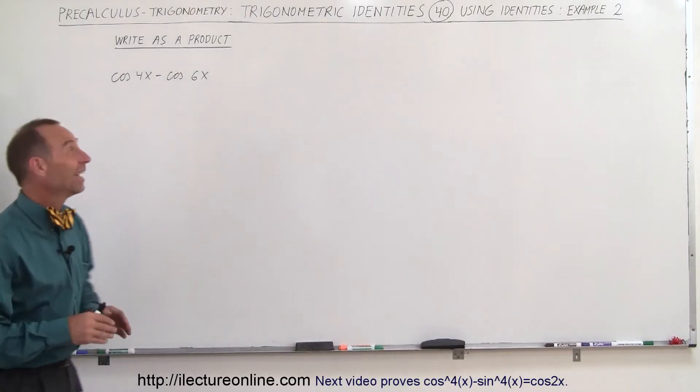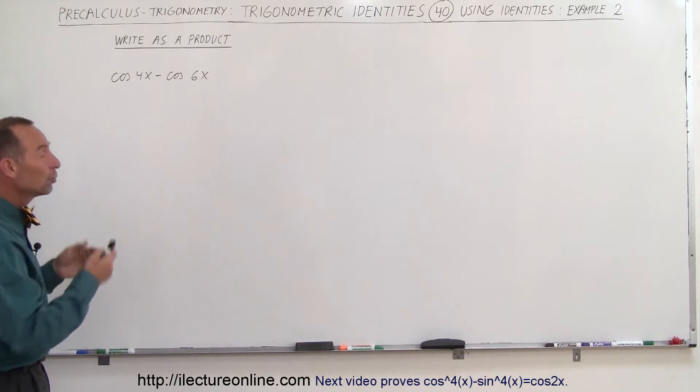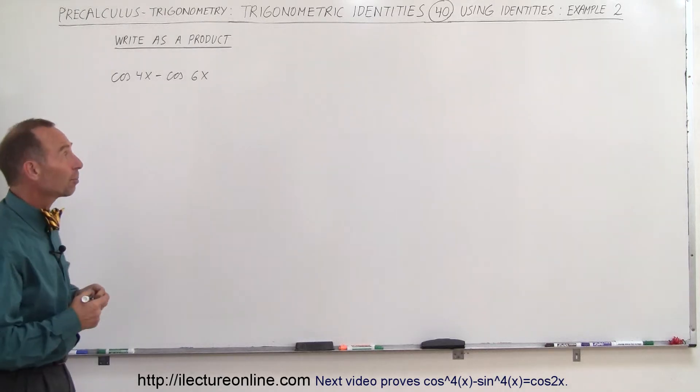Welcome to ElectronLine. Now we're going to change this into a product. So we have the difference of two cosines. What does that look like as a product?